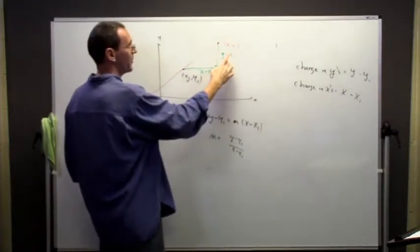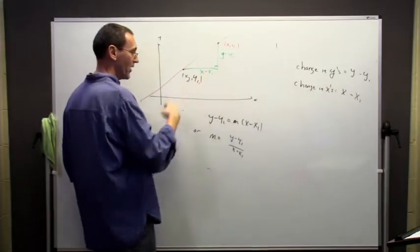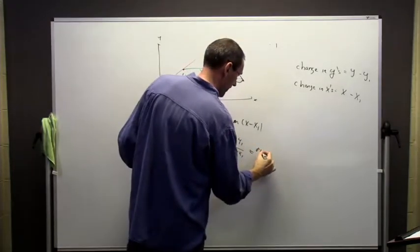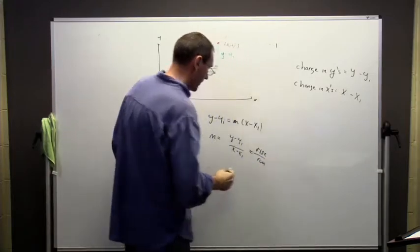And this proportion of the rise over the run, you'll hear us say that, is called the slope.